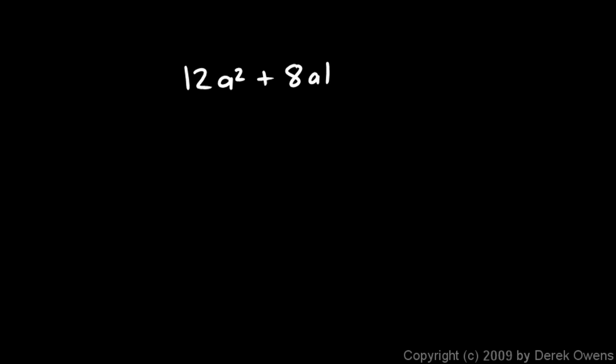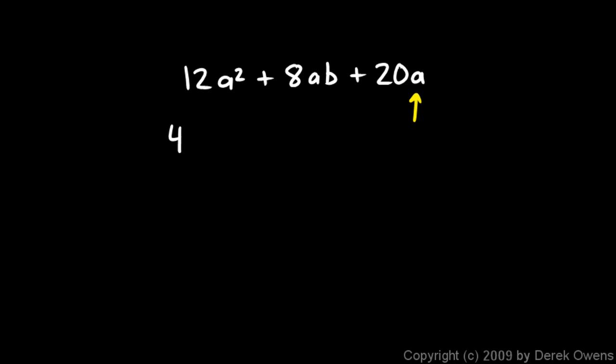Next example: 12a² + 8ab + 20a. All of these coefficients are even, so I can factor a 2 out, but looking more closely I realize 12, 8, and 20 are all multiples of 4, so I can factor out a 4. I also see an 'a' in every single term, so I can factor out an 'a' as well. In general, you want to factor out the largest possible factor that all terms have in common, so I'll factor out 4a.